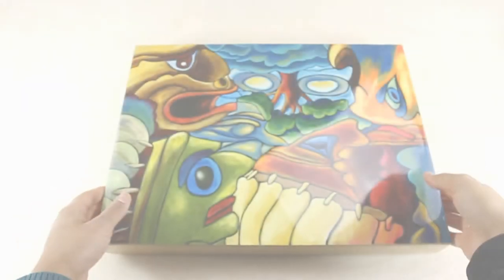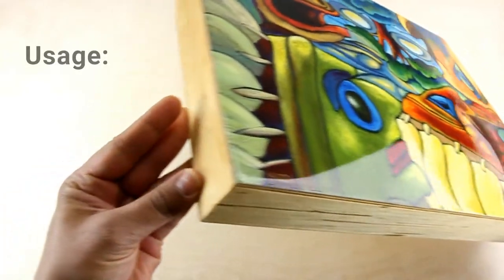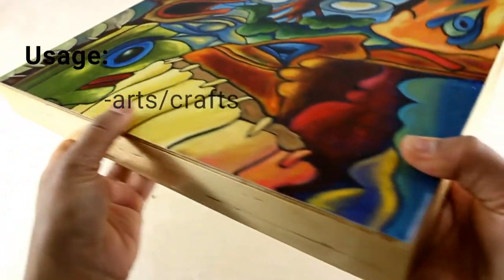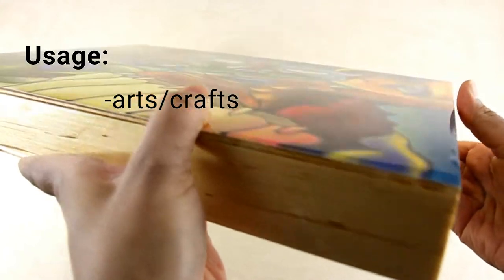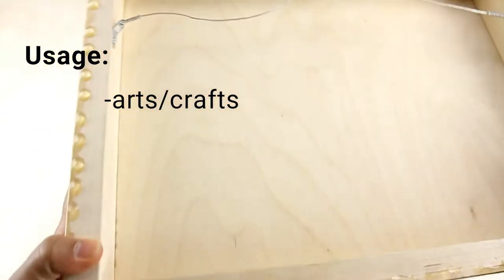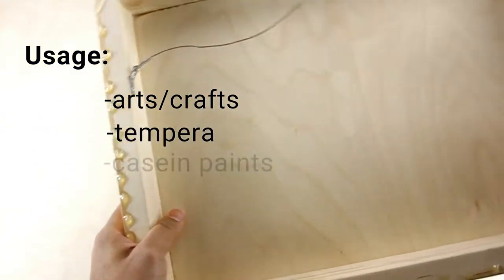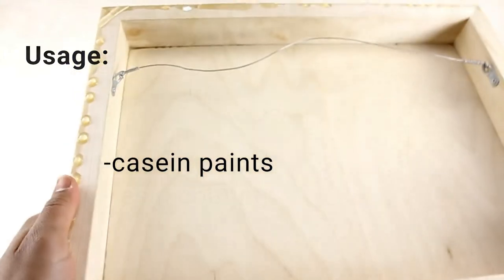A wooden surface provides a flat, rigid surface suited for arts and crafts or anything you could imagine. Wood panels are best for non-flexible media such as tempera, casein paints, and resin coatings.